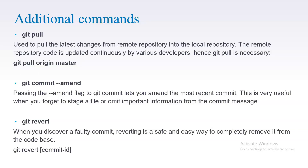Next is 'git commit --amend'. Passing the amend flag to git commit lets you amend the most recent commit. This is very useful when you forget to stage a file or omit important information from the commit message. If you want to modify a commit message to add some additional info, you can use 'git commit --amend', update it, and then push the changes.